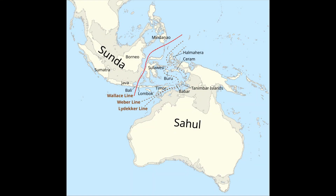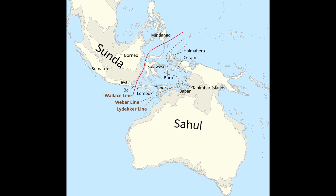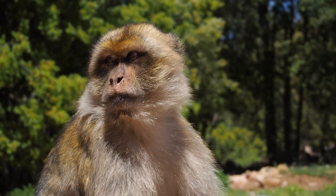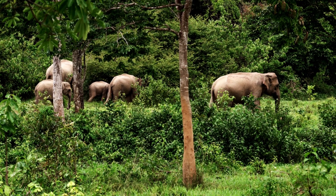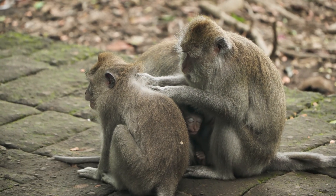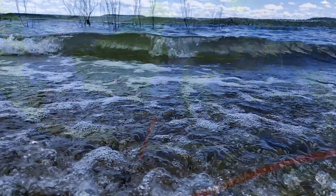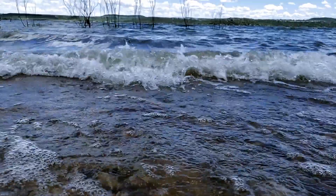Even if primates had managed to spread as far as Sulawesi, an island that lies within Wallacea, they still would have faced the immense challenge of crossing open water. Unlike humans, monkeys do not build boats, and they are generally poor swimmers. While some animals, such as elephants, are known to swim long distances and may have colonized islands that way, monkeys lack the stamina and physical adaptations for extended swimming. The ocean gap between the nearest monkey-inhabited islands and Australia, known as the Lombok Strait and the Timor Sea, was simply too wide for them to cross naturally. Without a land bridge or an accidental rafting event, where animals drift on floating vegetation, monkeys remained restricted to Asia.